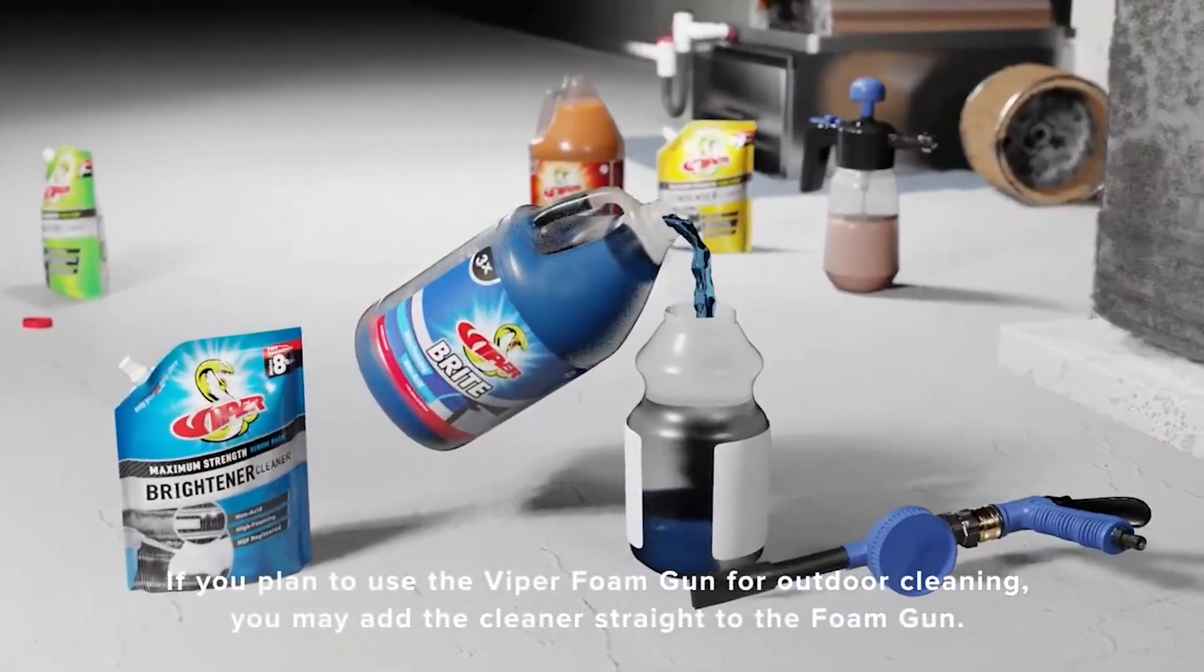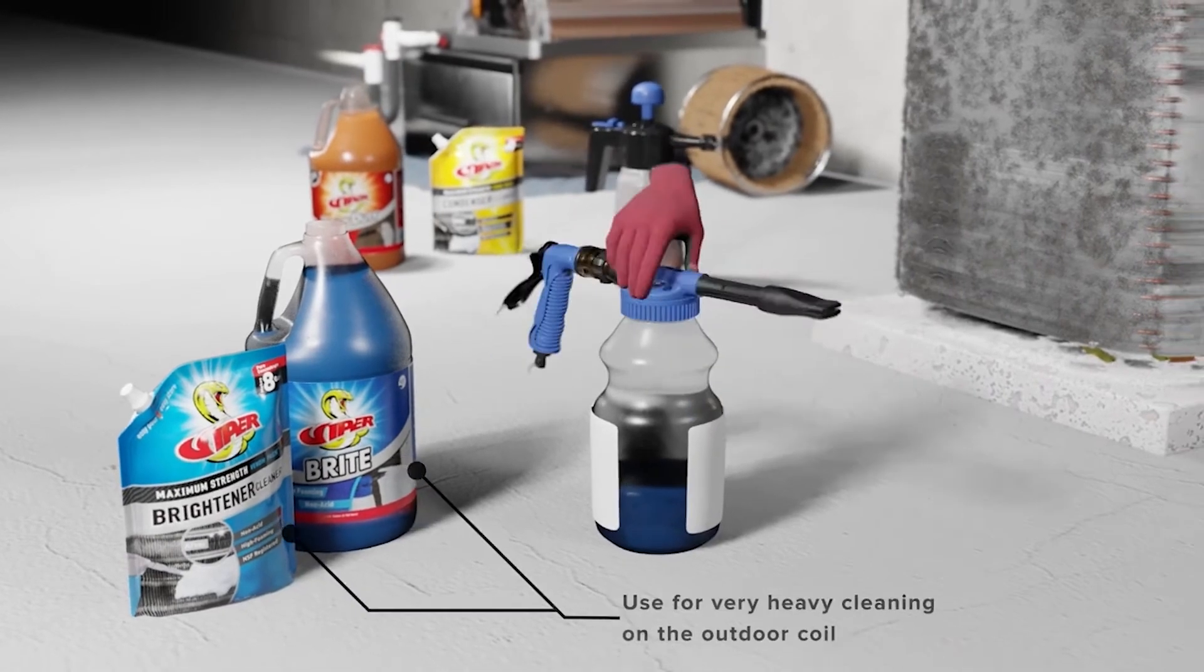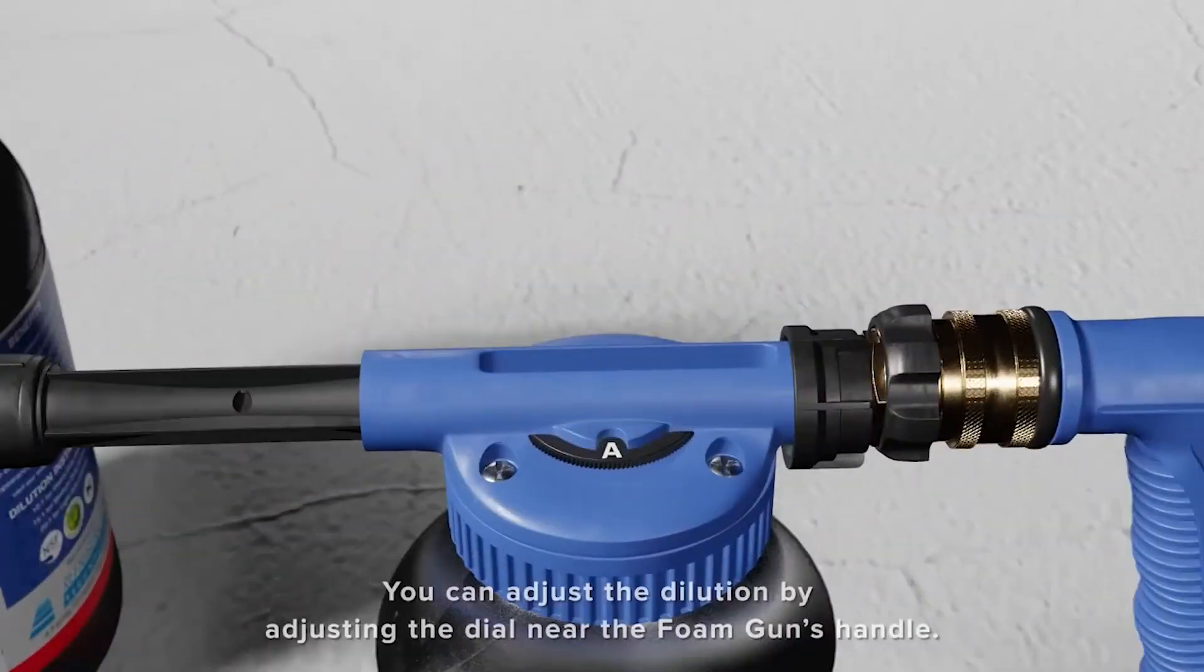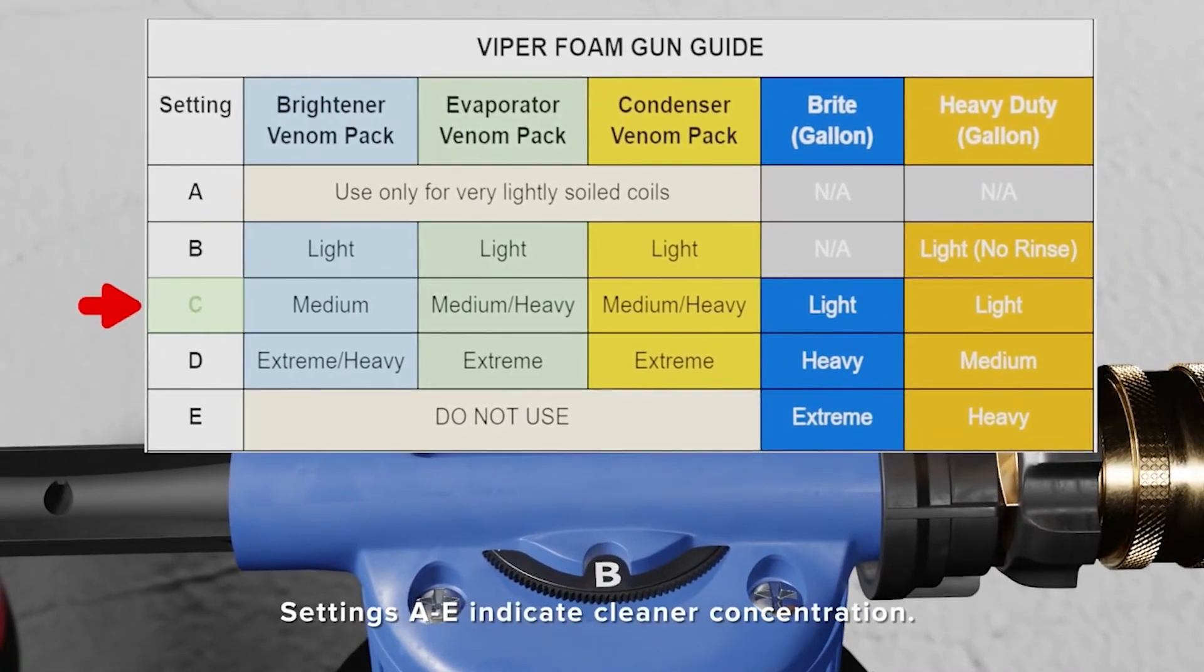When using the Viper foam gun that's connected to the hose, you can simply add the cleaner directly to the gun and select the proper setting on the gun for appropriate dilution. Here's our Viper foam gun guide for each of the cleaners.